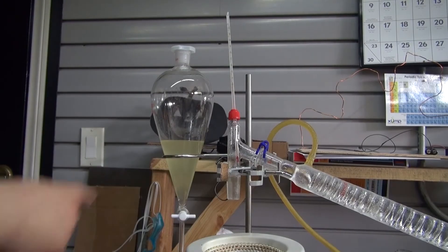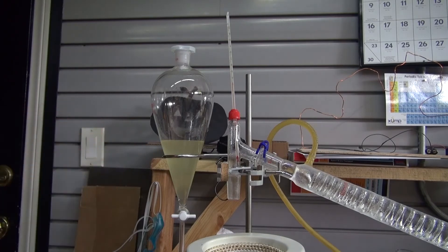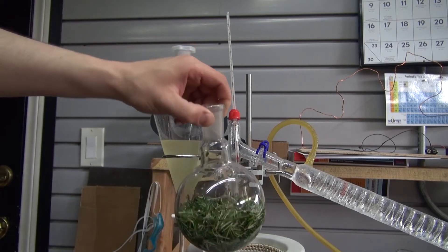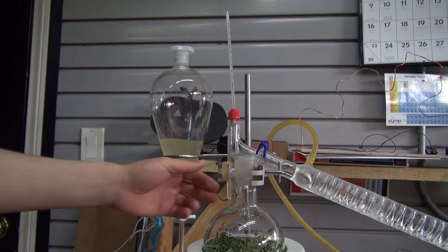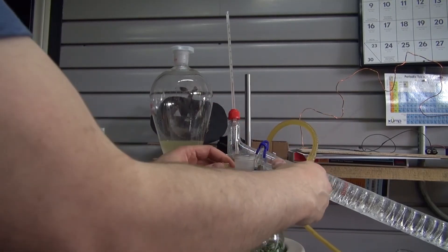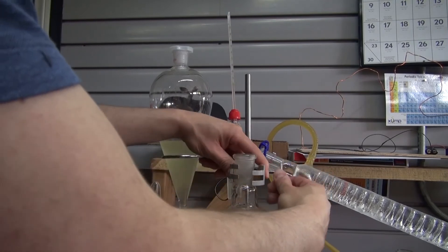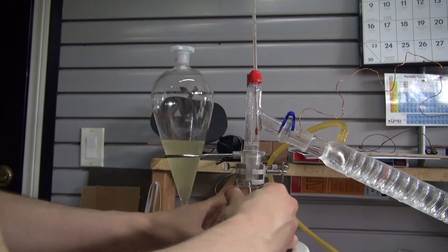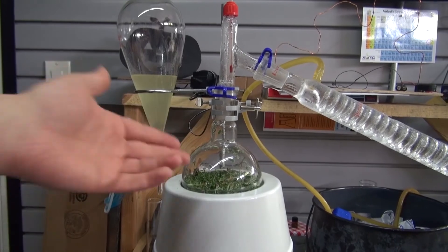Basically what I've done is I took my first batch and put it to the side just so I can compare my second batch to the first one. I have my second batch ready to go. Place it into my heating mantle, clamp it into place, reattach the joints, and turn on the heating mantle.